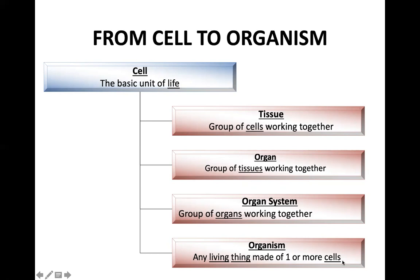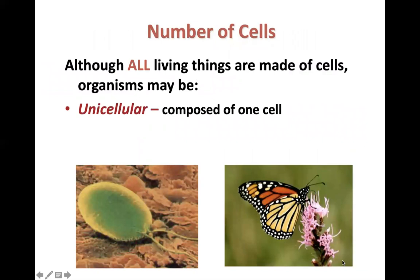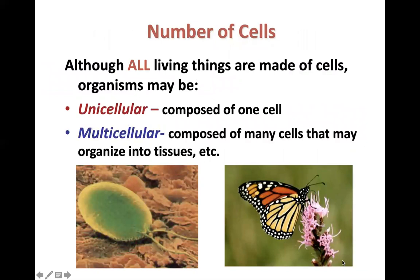An organism can be made of one cell, which is called a unicellular organism, or it could be like us — humans — made of many, many cells. Unicellular organisms are composed of one cell, like bacteria for example. Multicellular organisms are composed of many cells that may organize into tissues and so on, as we described.